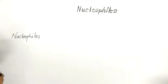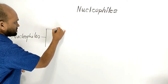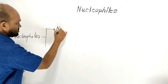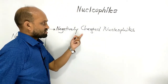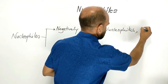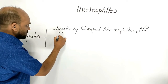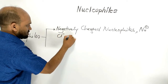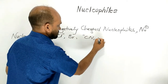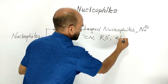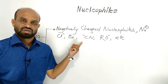Nucleophiles are classified into two groups. One is negatively charged nucleophiles, denoted by NU⁻. Examples are all the anions like chloride ion, bromide ion, cyanide ion, alkoxide ion, etc. These are negatively charged nucleophiles.